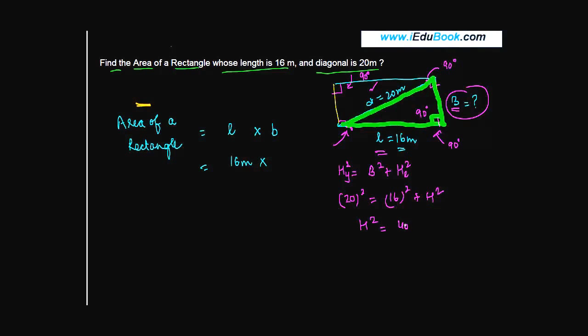h square is equal to 20 square is 400, minus 16 square is 256, or 144. We can say that the height is equal to square root of 144, which is plus minus 12. Because the height or the breadth cannot be negative, we say that the breadth is equal to 12 meters.